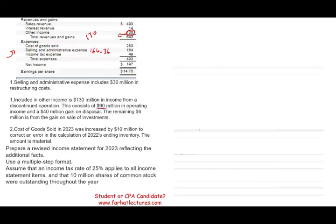This $130 million consists of $90 million in operating income and $40 million gain on disposal. Discontinued operations require us to report operating results and any gain or loss on disposal — both reported net of tax. The remaining $6 million in other income is from the gain on sale of investments, which will be reported under other revenue. We need to take these numbers and reorganize them properly, as an accountant working in a CPA firm would do when given an improperly prepared income statement.